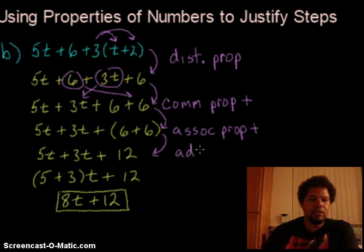Now next they went ahead and factored out the t from the 5t and the 3t. So what is that property, what allows us to do that? That is the distributive property once again. Doesn't mean once we use the property we can't use it again, so we can use it as many times as we need to get there.